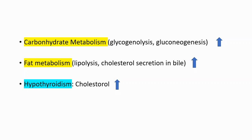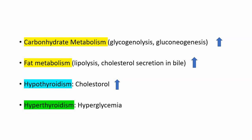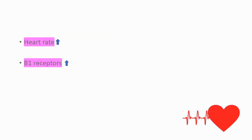So in hyperthyroidism, we will see increased levels of blood sugar, which means hyperglycemia. Lastly, we will see increased levels of heart rate because we will have increased levels of beta-1 receptors on our heart.